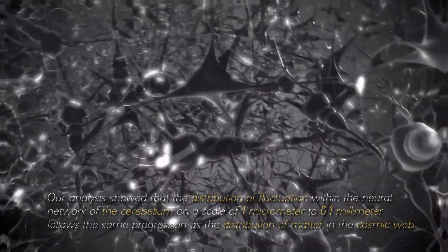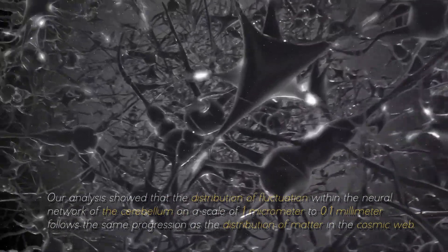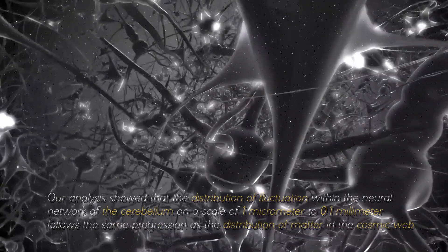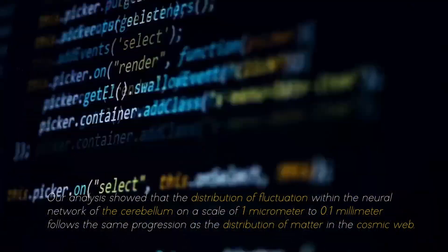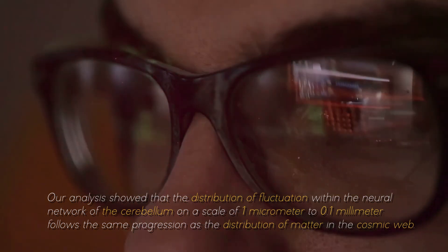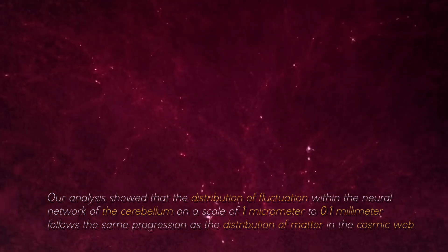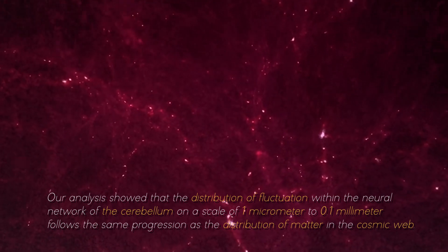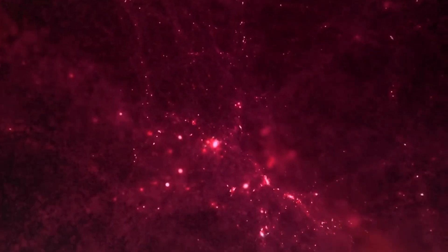Our analysis showed that the distribution of fluctuation within the neural network of the cerebellum on a scale of 1 micrometer to 0.1 millimeters follows the same progression as the distribution of matter in the cosmic web, commented one of the researchers in charge of this project.